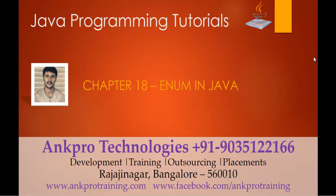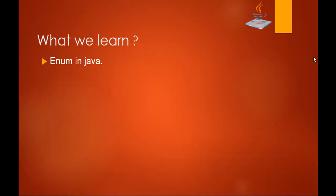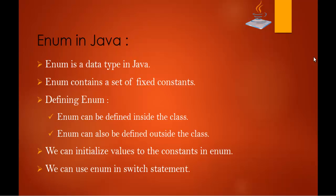Hello, welcome to Java Programming Tutorials Chapter 18: Enum in Java, brought to you by AngPro Technologies. My name is Harish. In this session we are going to learn about enum in Java. Enum is a data type in Java that contains a set of fixed constants. If you want to define a set of fixed constants, you can make use of enum.